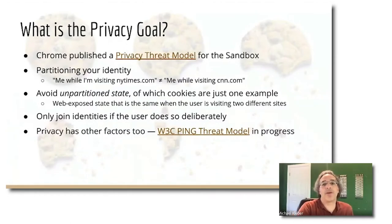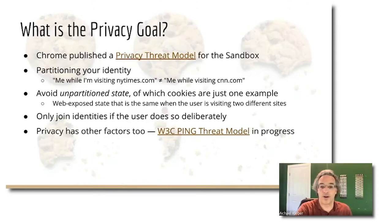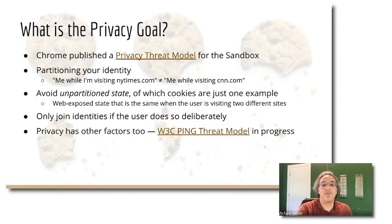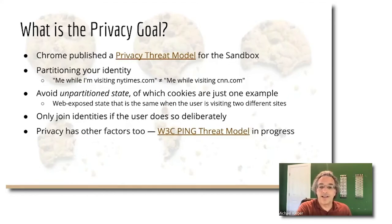When we say 'get rid of third-party cookies,' that's a statement about a technology, but we're really using it as shorthand for a more abstract goal. We published a privacy threat model — it's really about partitioning your identity while you're on the web. Different sites might each have their own notion of your identity, but those identities should remain distinct from one another. Me visiting NewYorkTimes.com should be a distinct identity from me while I'm visiting CNN.com. The central privacy threat we're focused on is joining these per-site notions of who the user is across distinct first parties.